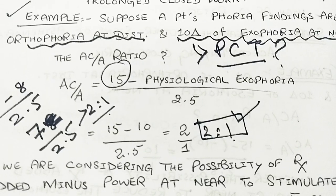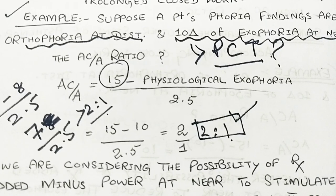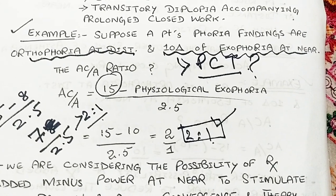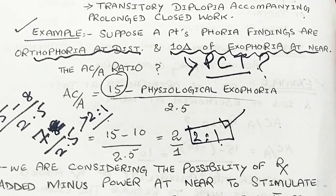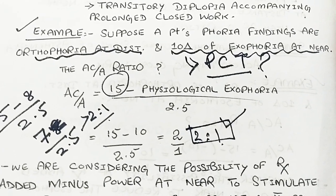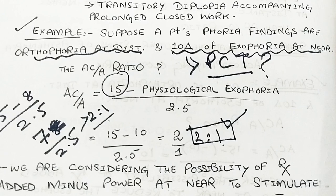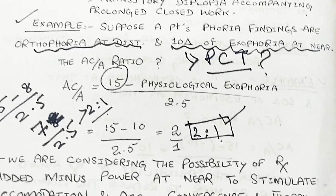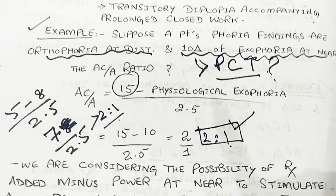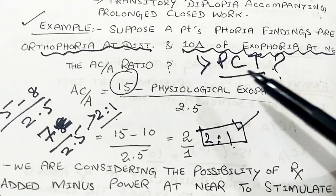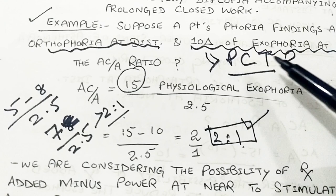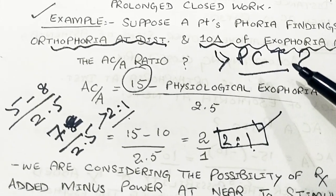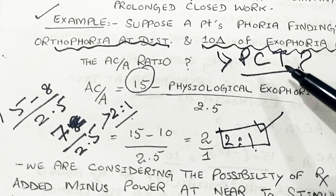Here we have an example: suppose a patient's phoria findings are orthophoria at distance and 10 prism diopters of exophoria at near. That 10 prism diopters of exophoria is found out by prism cover test, which I will explain in my next video.